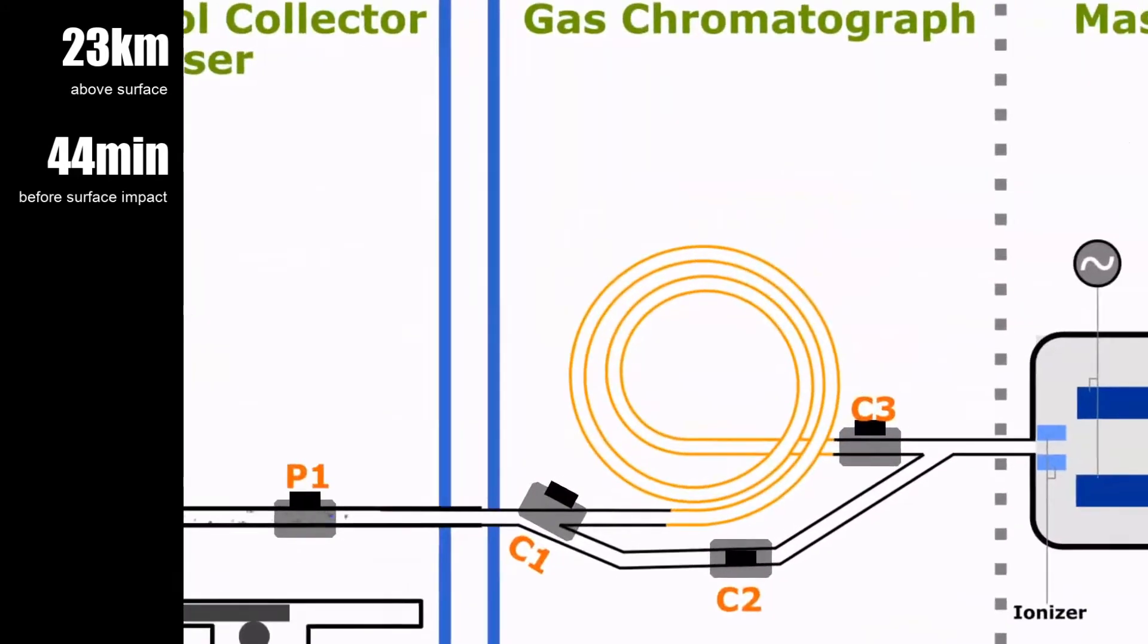The GCMS is really two instruments linked together: a gas chromatograph and a mass spectrometer.